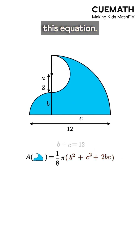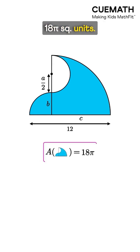It can be rewritten as B plus C, the whole squared. Since we know this value is 12, solving gives the shaded area as 18 pi square units.